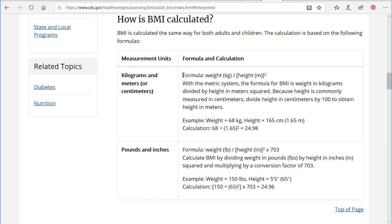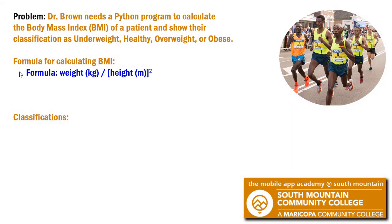So here's my formula. It's the weight in kilograms divided by the height in meters squared. I'm going to come back to my notes and put a note here. The formula is the weight in kilograms divided by the height in meters squared.